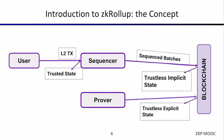Once in a while, when it has many transactions or after a timeout, the sequencer sends these transactions on-chain — it puts them in calldata in a normal Ethereum transaction. At this point the transactions are final and trustless: nobody can modify them, everybody knows what transactions will be executed, and you can compute the new state. Anyone can compute this new state because the transactions execute deterministically on top of the previous batch.